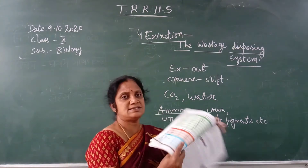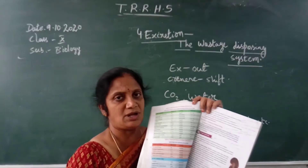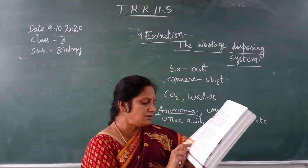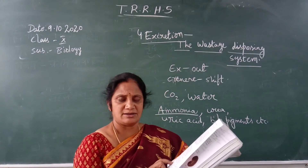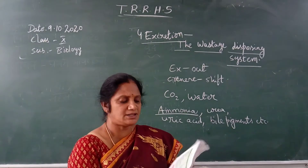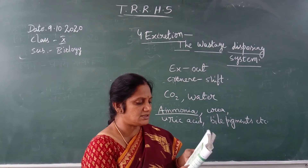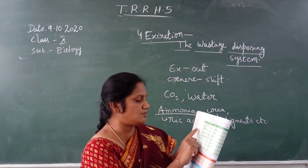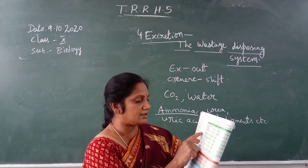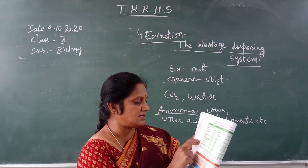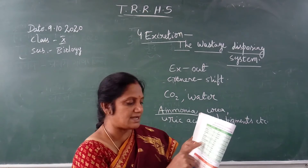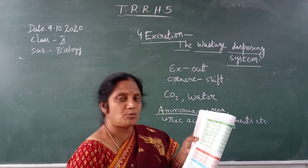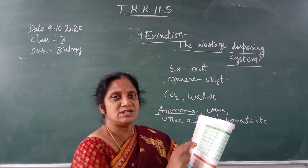Now you see the blood report. When you see the blood report, the first question is: what are the substances present in the blood? The substances are glucose, sodium, potassium, fluorides, urea, creatinine, uric acid, cholesterol, triglycerides, calcium, phosphorus, bilirubin, proteins, and albumin. These are the substances tested in the blood.